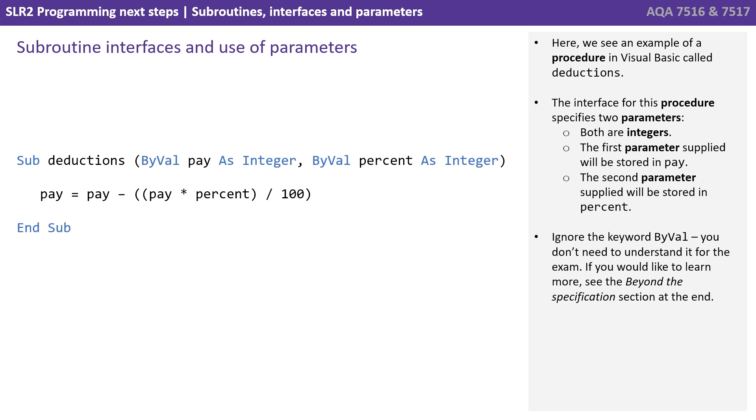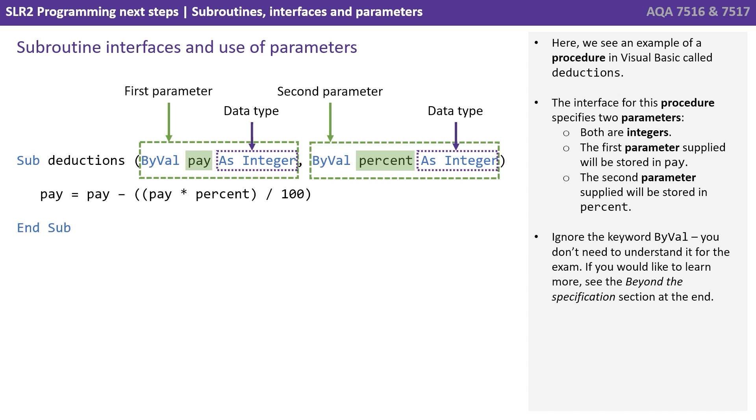Here we see an example of a procedure in Visual Basic called deductions. The interface for this procedure specifies two parameters, both integers. The first parameter supplied will be stored in pay. The second parameter supplied will be stored in percent. Ignore the keywords by val, you don't need to understand that for the exam. If you'd like to learn a little bit more about that, you can check out the beyond the specification section at the end.